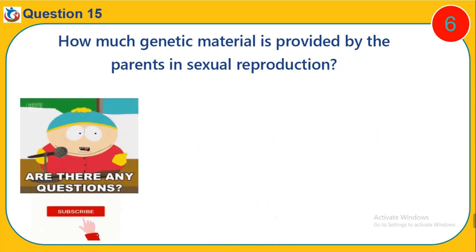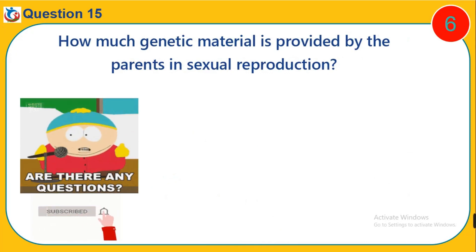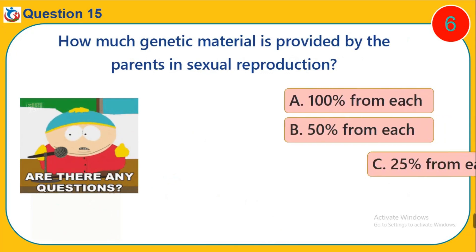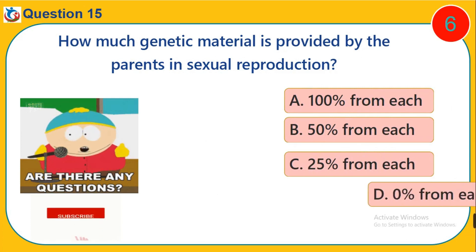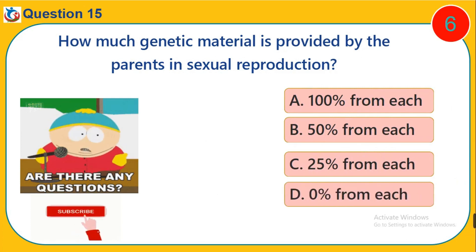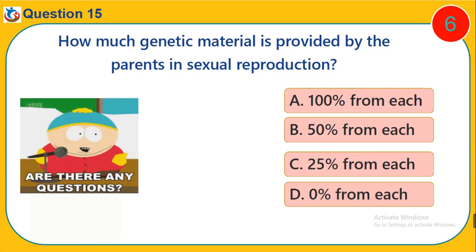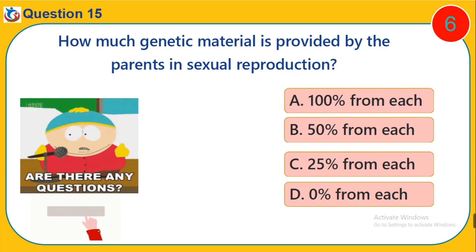Question 15. How much genetic material is provided by each parent in sexual reproduction? A. 100% from each. B. 50% from each. C. 25% from each. D. 0% from each.